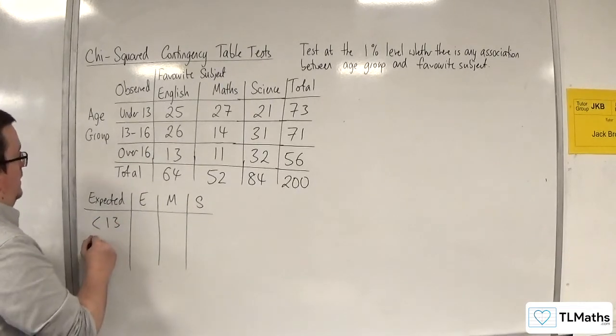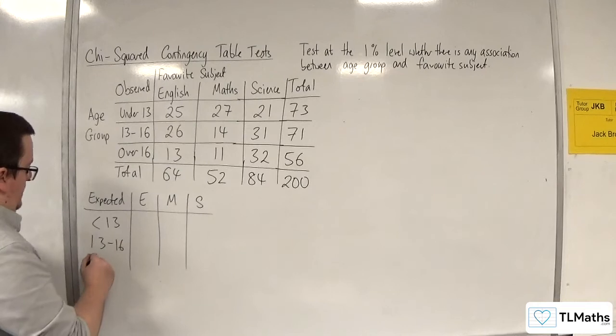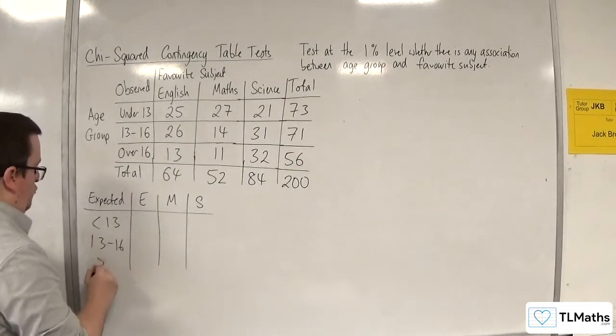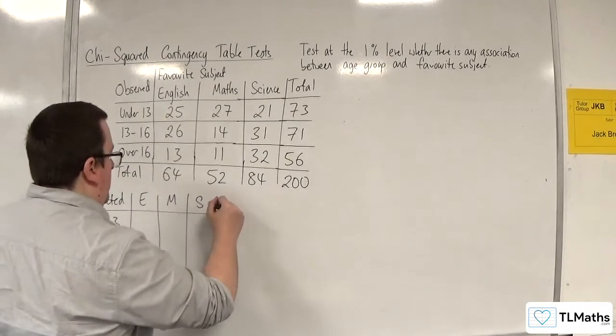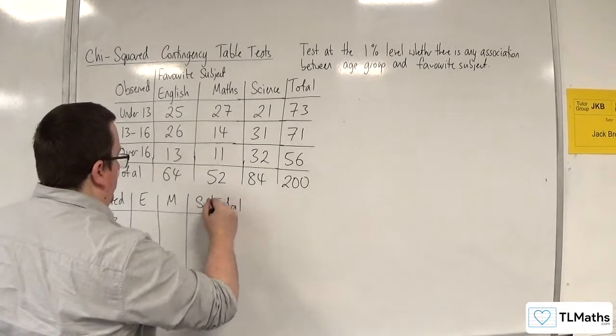I'm just going to abbreviate these. So under 13, 13 to 16, and greater than 16. And I'm going to have a total row and a total column. These are for checking purposes.